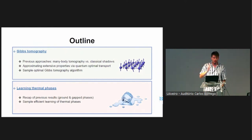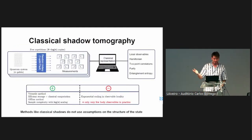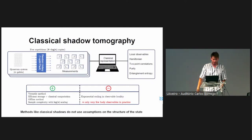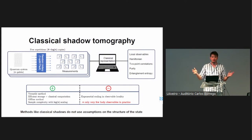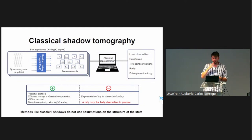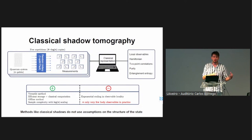I'll first discuss the setting where we are given copies of the same state, then move on to learning phases. Yesterday we had a nice overview of shadow tomography — shadows are very versatile, efficient in storage and classical computation. If you want to estimate all marginals of a fixed size of a quantum state, you can do this with log n samples. However, if you look at how sample complexity scales in the size of the support of the observables, there's an exponential scaling, so in practice even with shadows you cannot really recover observables supported on huge parts of the system.